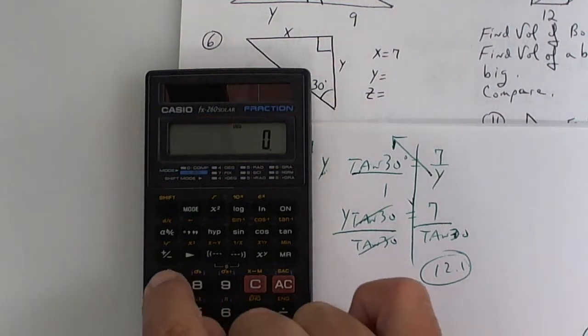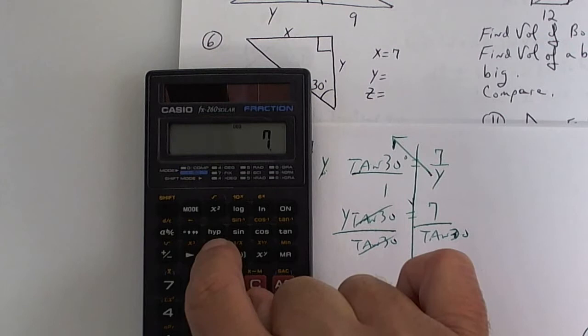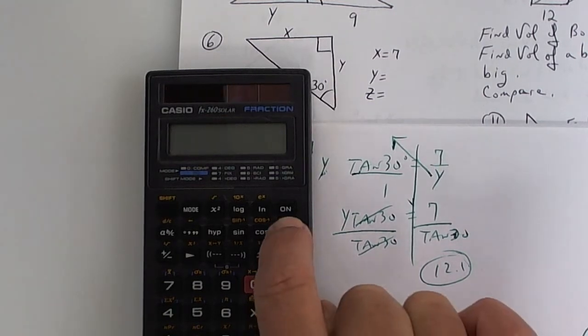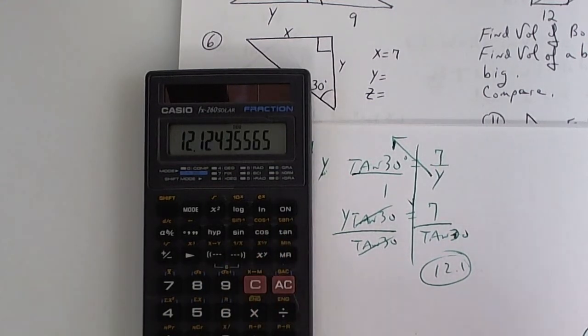It's 12.1. If you didn't get 12.1, you need to. Alright, watch again. Clear your calculator. Press 7, divide it by open parentheses. And then press 30, and then press tangent, close parentheses, press equals. Did you get it? Alright.